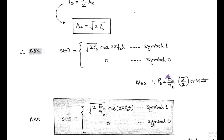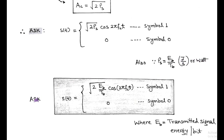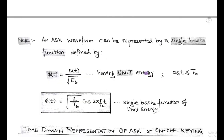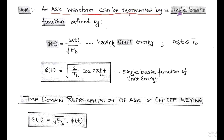Also, sinusoidal power PS can be written as EB/TB, that is, bit energy per bit duration, with units of joules per second or watts. So the ASK wave in terms of bit energy and bit duration is expressed as: S(t) = √(2EB/TB)·cos(2πfct) for symbol 1, and 0 for symbol 0, where EB is the transmitted signal energy per bit. This ASK waveform can also be represented by a unit energy function called the single basis function, defined as φ(t) = S(t)/√EB, and its expression is φ(t) = √(2/TB)·cos(2πfct).